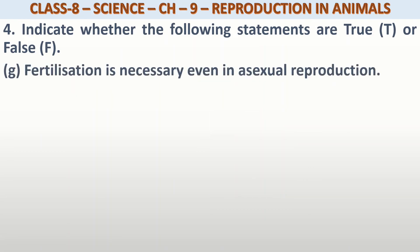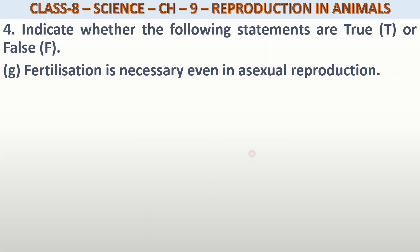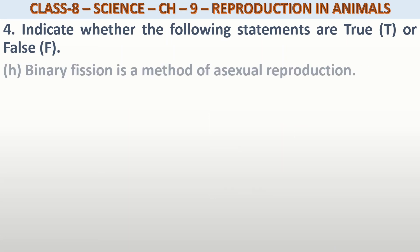Fertilization is necessary even in asexual reproduction. Asexual reproduction में भी fertilization चाहिए? नहीं। क्योंकि asexual reproduction में budding या binary fission के through होता है, तो इसमें male gamete और female gamete की ज़रूरत नहीं होती।